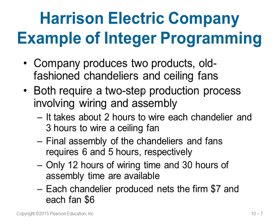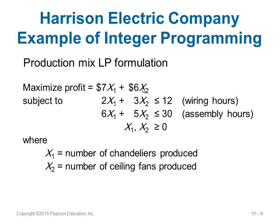Let us take an example. A company has two products: chandeliers and ceiling fans. It takes two hours to wire each chandelier and three hours to wire a ceiling fan. There are two processes: wiring and assembling. For assembling, they need six hours per chandelier and five hours per fan. They have only 12 hours of wiring time and 30 hours of assembly time available. A chandelier gives a net profit of seven dollars and a fan gives six dollars.